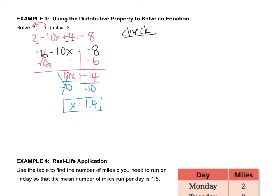So the way that you check is you rewrite the equation, but wherever you see an x, you put 1.4. So 2 parentheses, 1 minus 5 times 1.4 plus 4 equals negative 8. Now, since I'm not doing any inverses, I'm just going to do regular order of operations. Inverses are only used when you're solving the equation for the variable. When you have the variable, you just do it like you did it back in 5th and 6th grade. So I have to do parentheses first.